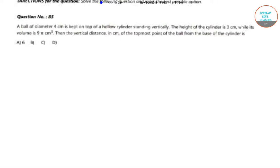Hello students, welcome to search classes. The question is: a ball of diameter 4 cm is kept on top of a hollow cylinder standing vertically. The height of the cylinder is 3 cm while its volume is 9π cm³. Then the vertical distance in centimeters of the topmost point of the ball from the base of the cylinder is. So this is the cylinder and this is a ball.